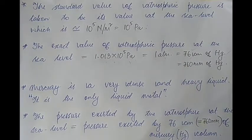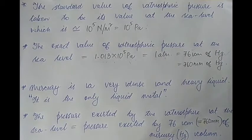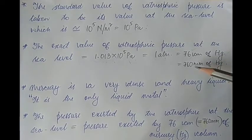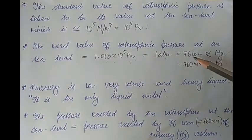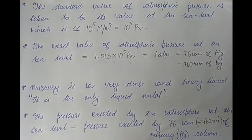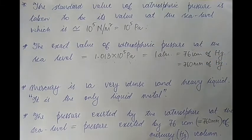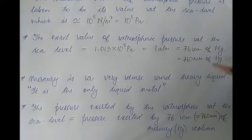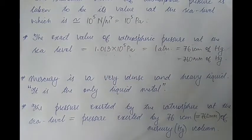Atmospheric pressure can be expressed in pascals, in atmospheres, or in terms of the height of a mercury column — in centimeters or millimeters of mercury. For example, in Darjeeling the atmospheric pressure is less, about 69 or 70 centimeters of mercury. The pressure exerted by 76 centimeters of mercury is a huge value — so huge that it can actually crush us humans to death.